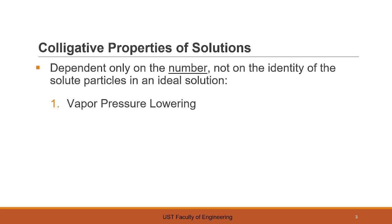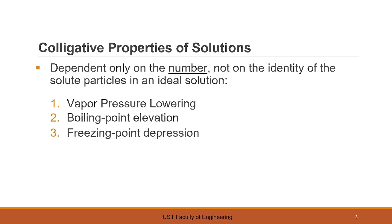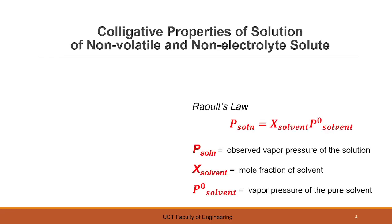Some of the colligative properties of solutions include vapor pressure lowering, boiling point elevation, freezing point depression, and osmotic pressure. Colligative properties of solutions are applicable for non-volatile and non-electrolyte solutes. When these solutes are added to our solvent, the solution properties are affected by the amount of solute added, and the resulting solution exhibits these colligative properties.